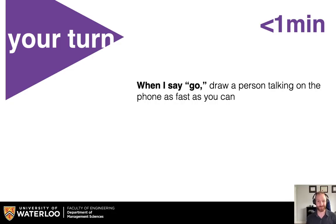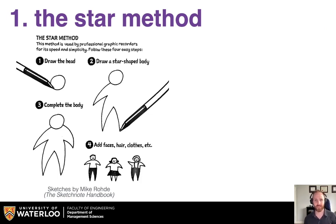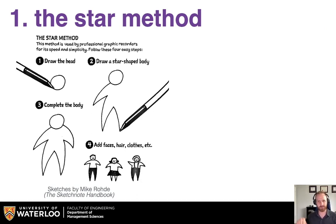How does that compare? The method I used was called the star method. There are actual methods for how you might be able to quickly sketch things. You start by drawing the head, you draw a star-shaped body which is all just one line, and then you can add any details you want to make it fancier.